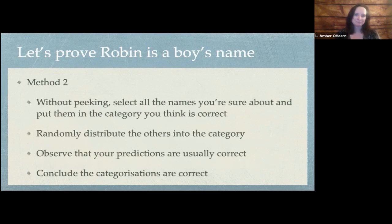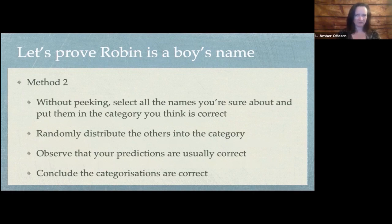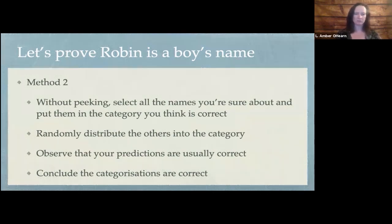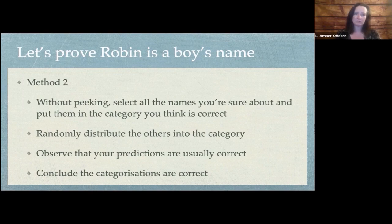Note that if I were a data scientist working for you and I presented this solution, you should question your decision to hire me. Here's something slightly better. Without peeking at the data results, we're going to select all the names that we're sure about and put them in the category we think is correct. And then all the ones that we're not sure about, let's just randomly distribute them into the categories similarly to what we did before. We will use those categories to make predictions and most of the time they're correct — so we must have done the right categories, right? We should easily see that there's something very wrong with this method, even though it got us a good result in terms of our predictions.